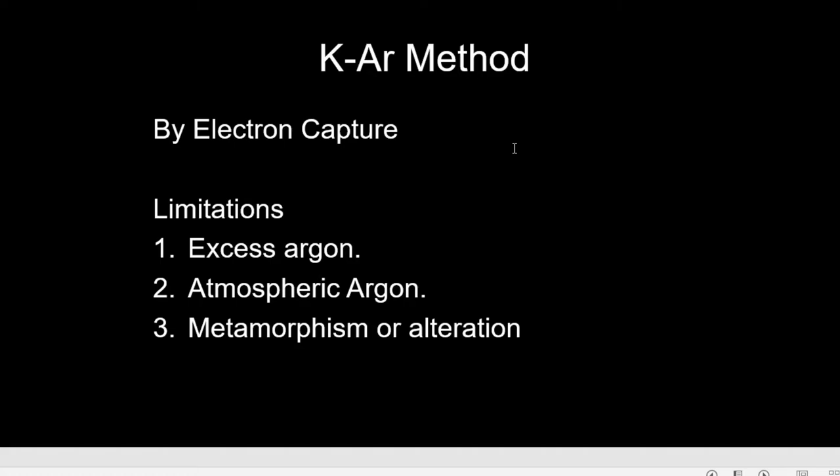The next type of dating is potassium-argon dating. Unlike the uranium-lead system, it involves the electron capture method. Potassium-40 is the radioactive isotope of potassium, making up about 0.1% of natural potassium. Since potassium is one of the ten most abundant elements in the Earth's crust, the decay of potassium-40 is important in dating rocks. Potassium-40 decays into two daughter isotopes: argon-40 and calcium-40.